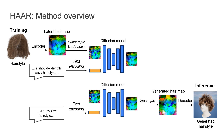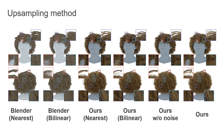During inference, we upsample the generated guiding latent hair maps using our proposed upsampling procedure and decode them into dense hairstyles. While classical upsampling methods work at the level of 3D strands, our approach operates at the level of latent hair maps. For more details, please refer to our paper.